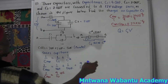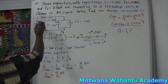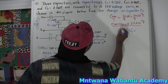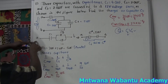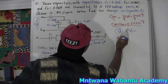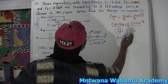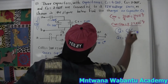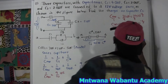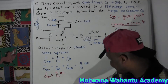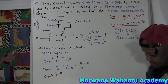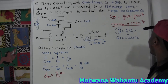Now we use the formula Q = C × V. We have C_total = 20/9 microfarads and V_total = 12 volts. So Q_total = (20/9) × 12 = 240/9 = 8/3 microcoulombs.